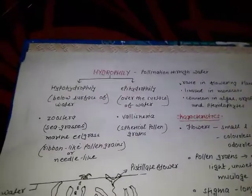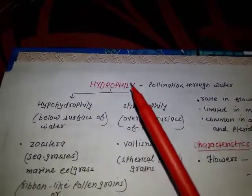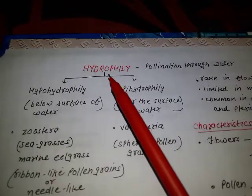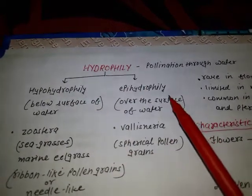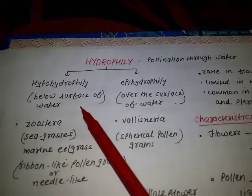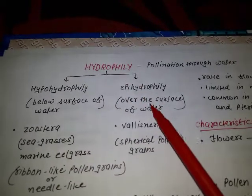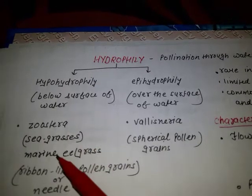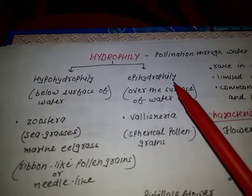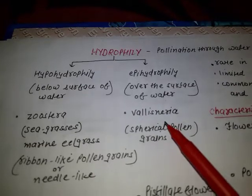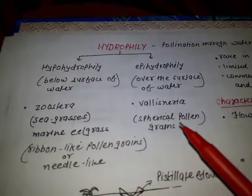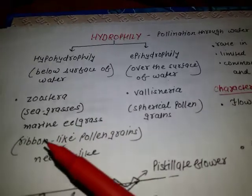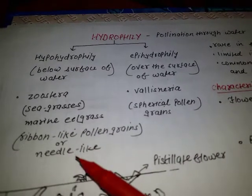Let us revise. Hydrophily is pollination through water. It is of two types: hypohydrophily — below the surface of water — and epihydrophily — over the surface of water. Example of hypohydrophily is Zostera, commonly called marine eel grass. Example of epihydrophily is Vallisneria. Pollen grains in Vallisneria are spherical, while in Zostera they are ribbon-like or needle-like.